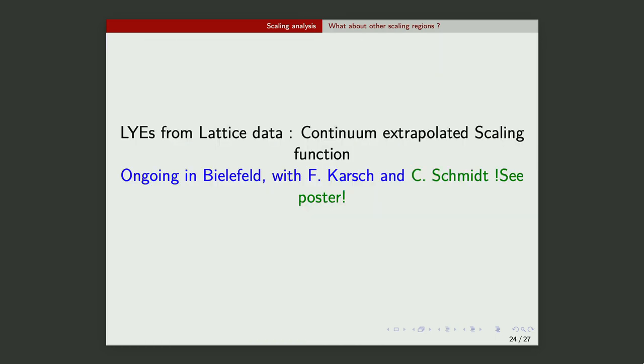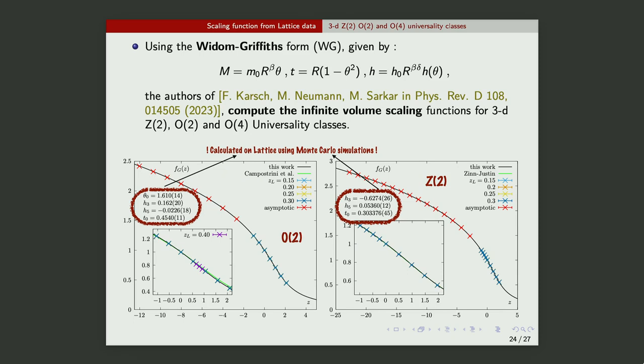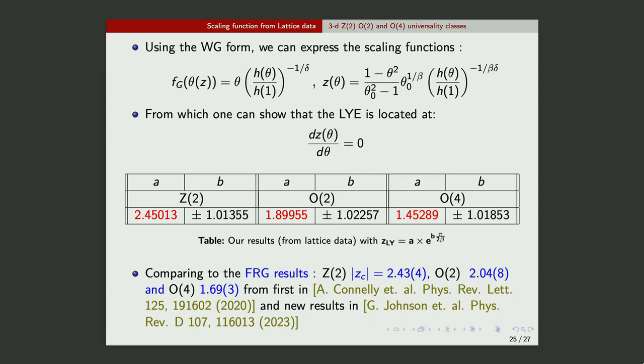Now to the last part, which I'll probably just display the results. So we are building on previously published work by Fridjof and his student. They're using lattice simulations for Z2, O(2), and O(4) models. They estimated these numbers, which when you combine with the Widom-Griffiths form, you can write your scaling function very nicely in terms of those parameters, and when you write it in this form, you can easily see that the Lee-Yang edge singularity must be located at dz/dθ = 0.